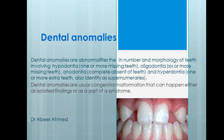Hypodontia is considered to be a dental anomaly. So what are dental anomalies? They are abnormalities in the number and morphology of teeth, involving different types. Let's see what the types of dental anomalies are, concerned with the number and morphology of teeth.